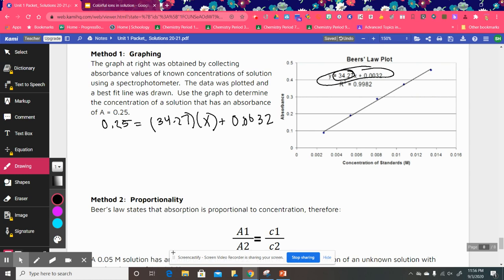So we're using our slope intercept formula. We're going to solve for x, do your subtraction, work your algebraic magic, and you should get a concentration of 0.0007 molar.